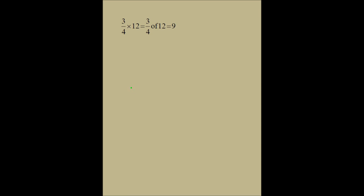What about 1 half times 20? That means 1 half of 20. And what's half of 20? 10. What we are trying to do is understand the connection between multiplying a fraction by a whole number and the link between the multiplication symbol and the word 'of' in English. There is a strong link. Half times 20, or half multiplied by 20, can be read as half of 20. So we are going to use that concept to model multiplication of fractions.